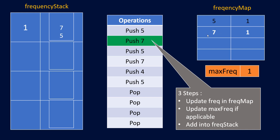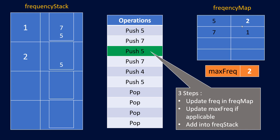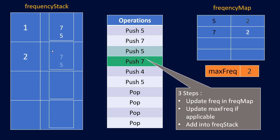When we push 7, its frequency is 1 and max frequency is already 1, so max frequency stays unchanged. We add 7 into the frequency stack at key 1, on top of 5. Pushing 5 again increments its frequency to 2, updating max frequency to 2, and we push 5 into the frequency stack at key 2. Pushing 7 again also reaches frequency 2, so 7 is added to the stack at key 2.